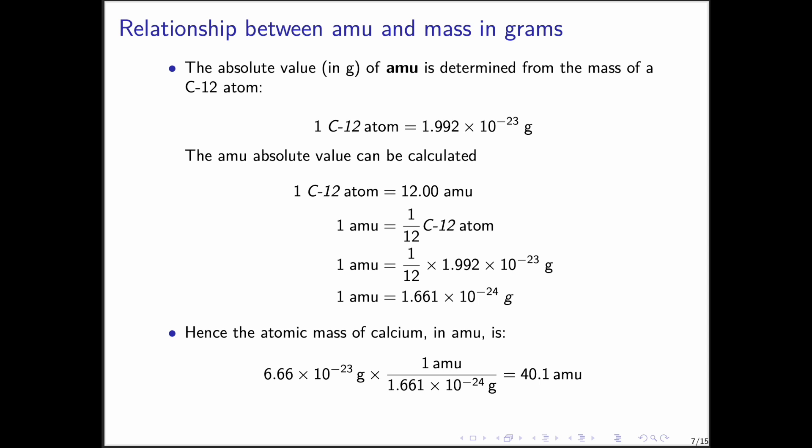Hence, the atomic mass of calcium in atomic mass units is calculated as its absolute mass in grams multiplied by the conversion factor of one atomic mass unit per 1.661 times 10 to the power of negative 24 grams. The result is approximately 40.1 atomic mass units.